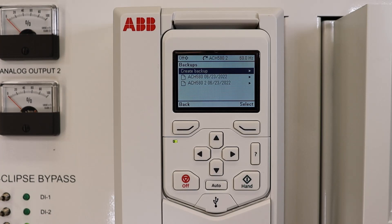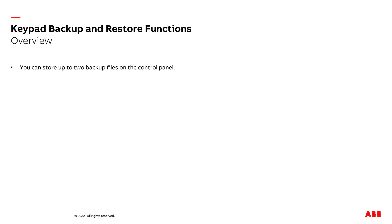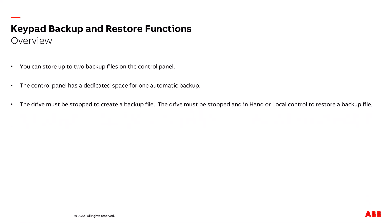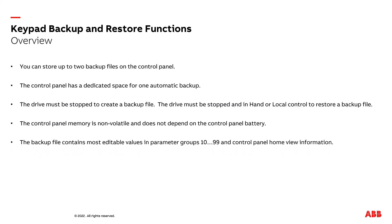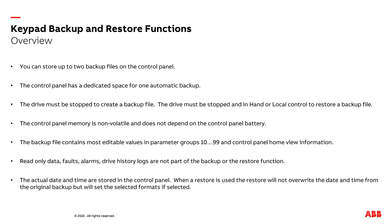Let's take a look at what you can do with these backup files. You can store two backup files on the control panel. The control panel has a dedicated space for one automatic backup. The drive must be stopped to create a backup file, and must be stopped and in hand or local control to restore a backup file. The control panel memory is non-volatile and does not depend on the control panel battery. The backup file contains most editable values from parameter groups 10 through 99 and the control panel home view information. Read-only data, faults and alarms, and drive history logs are not part of the backup or restore function. The actual date and time is stored on the control panel.